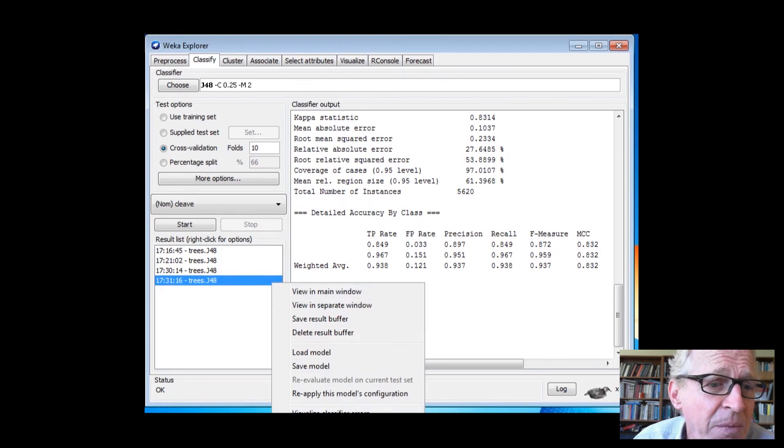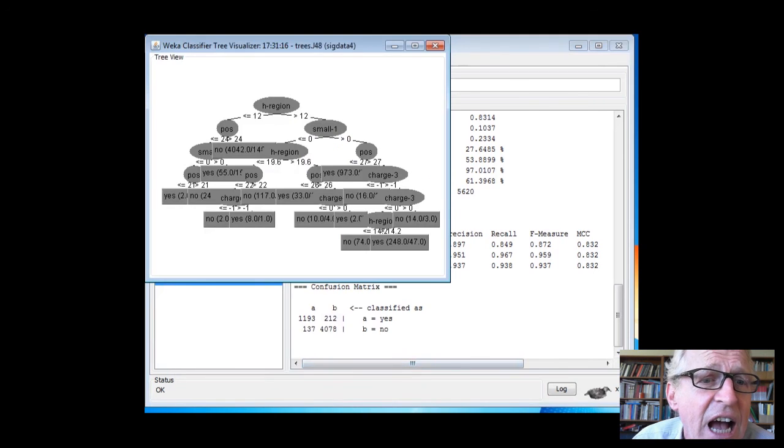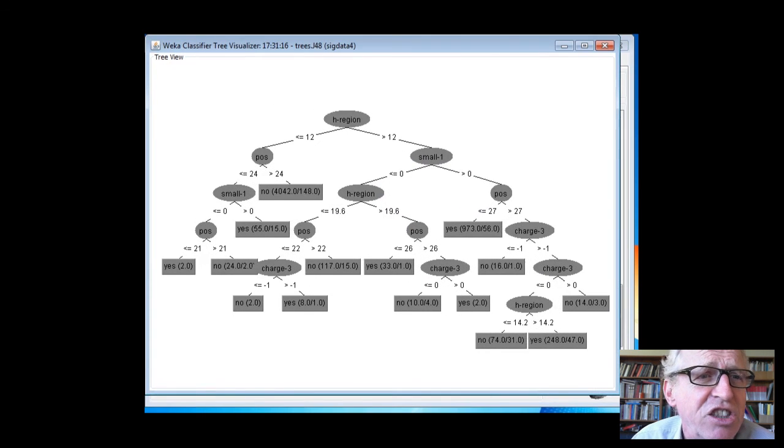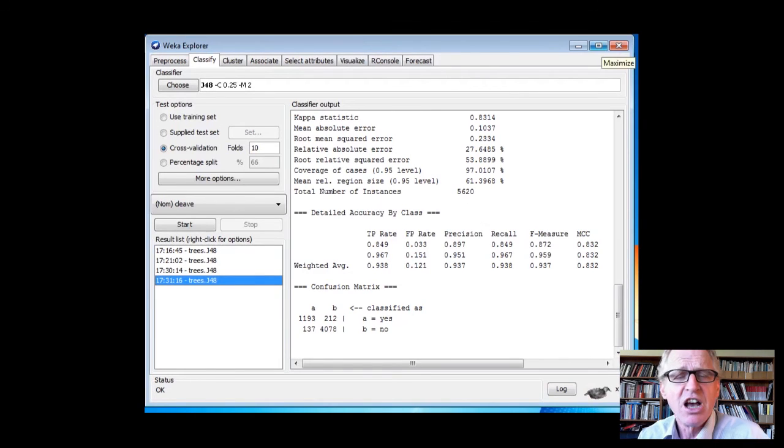And in fact, if we look at the model, if we visualize the tree, we can see a number of features here. At the top of the tree, it's looked at the H region, which we knew was useful in predicting the cleavage site. And then it's looked at the smallness of the minus one position and so on. So overall, this looks like it might possibly be capturing in a formal model, the general principles biologists told us all about.